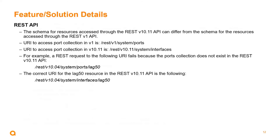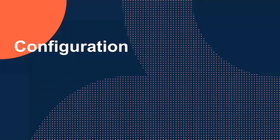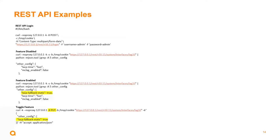This slide shows the REST API, which has changed from the original v1 implementation. With 10.11, the REST v10.11 system interfaces URI is used to configure lag interfaces and their attributes. Configuration via REST API is simple — you can do a GET to see if the feature is enabled or not, and toggle the feature on or off by setting the LACP Fallback Static option to true or false.